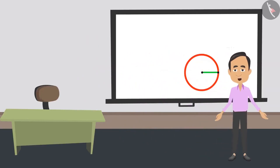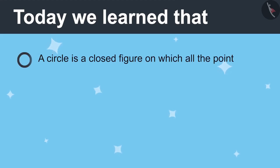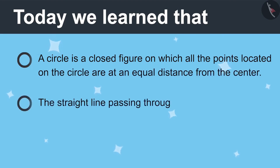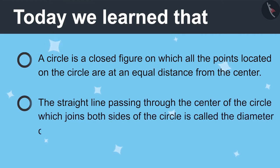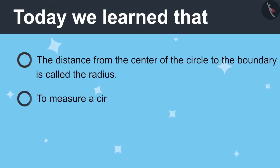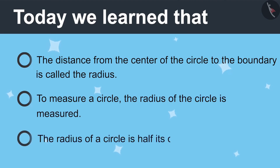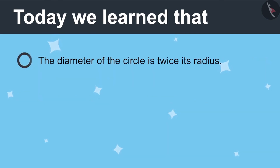Now you have understood how to measure a circle, so now you can measure the wheels you were asking about. Today we learned: a circle is a closed figure in which all the points are at the same distance from the centre. The straight line passing through the centre which meets both sides is called the diameter. The distance from the centre to the boundary is called radius. The radius of a circle is half its diameter, and the diameter is twice its radius.